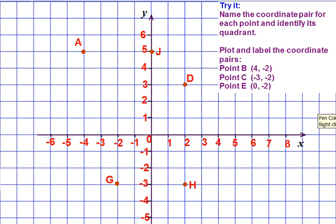So let's give it a try. First of all, name the coordinate pair for each point and identify its quadrant. D is in quadrant one. Remember to go side to side first and start at the origin. One, two. So positive two. One, two, three. So positive two. Positive three.